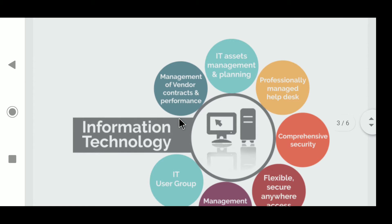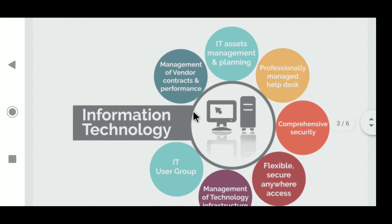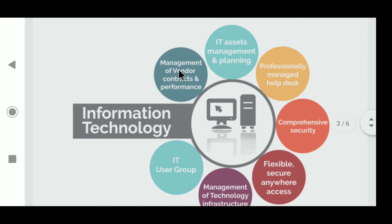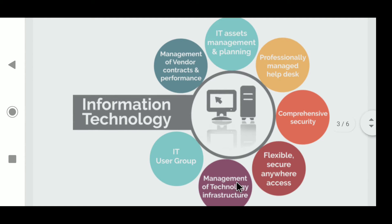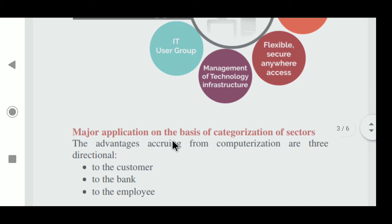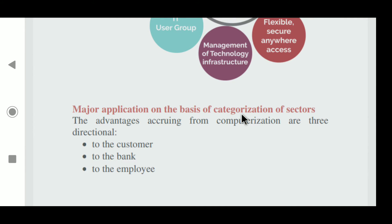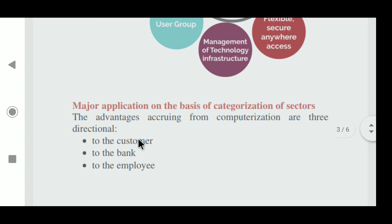IT can support management of vendors, contracts, and performance. It includes asset management and planning, professionally managed updates, comprehensive security, flexible and secure anywhere-access, and management of technology infrastructure and user groups. The major applications, on the basis of categorization, are three-directional: first, to the customer; second, to the bank; and third, to the employee. These three are the main categorizations of IT applications.